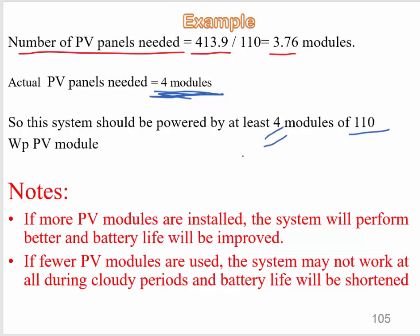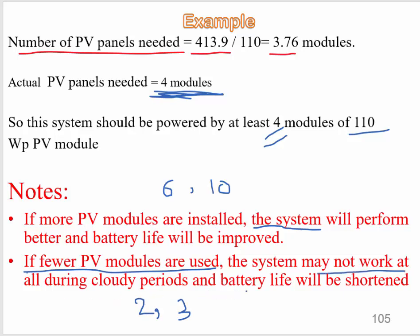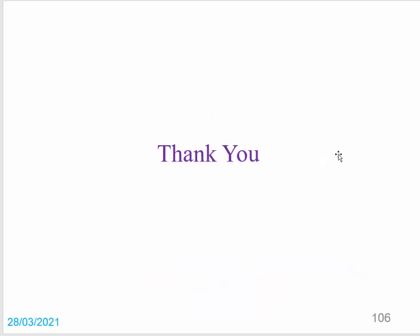Two additional notes: if more PV modules are installed — for example six or ten instead of four — the system will perform better and battery life will be improved, but cost will increase. If fewer modules are used — for example two or three — the system may not work at all during cloudy periods and battery life will be shortened. The optimal number for this system is four modules.